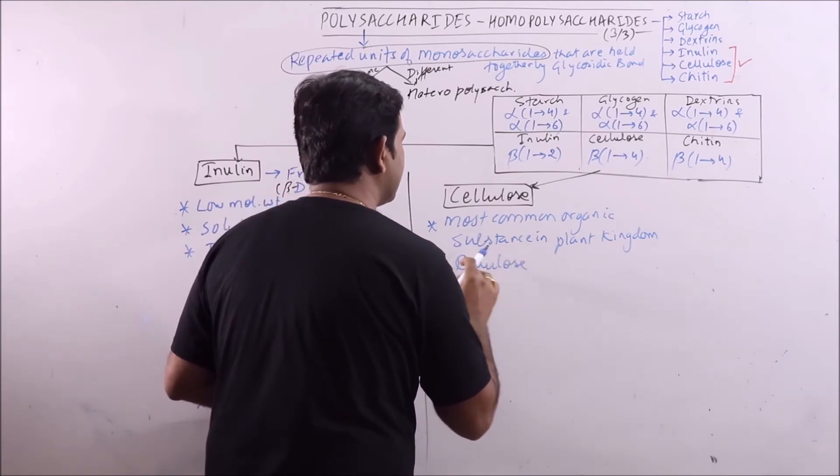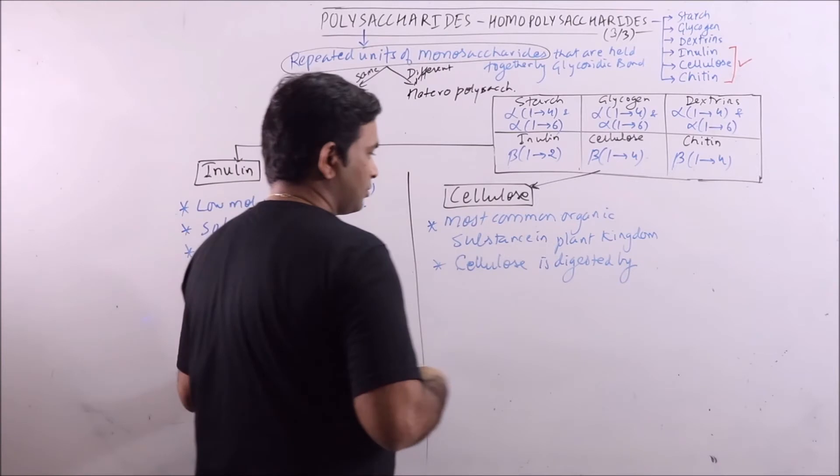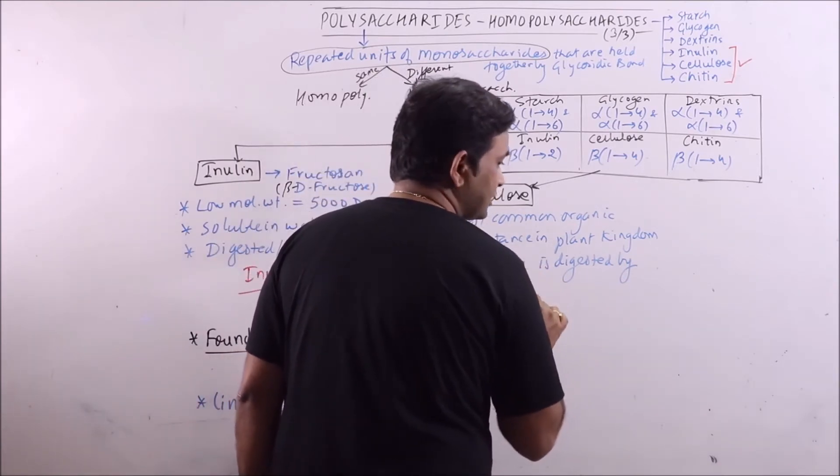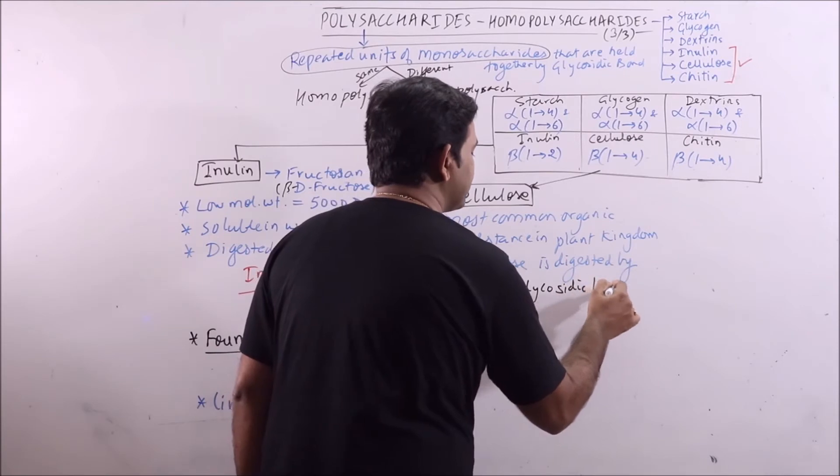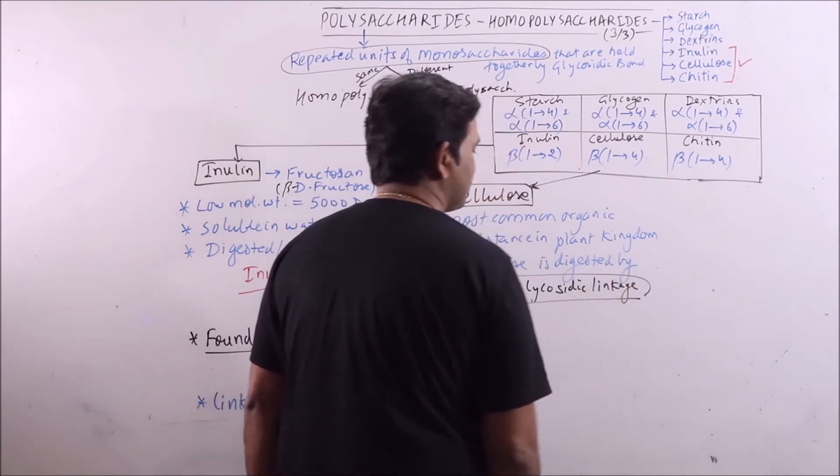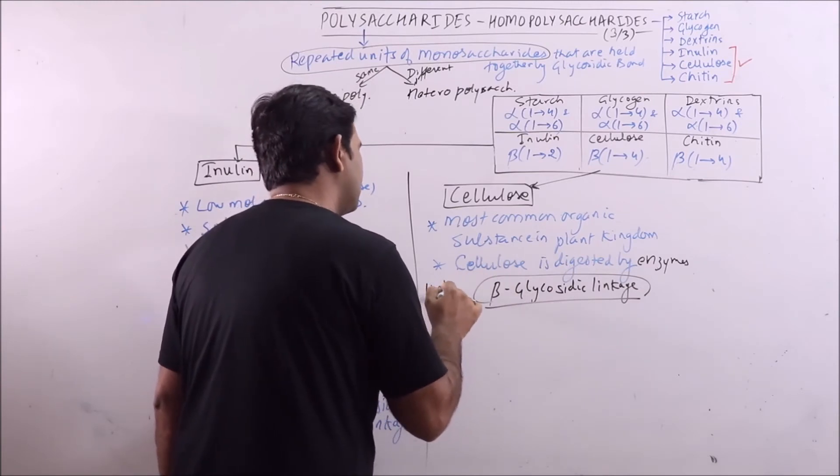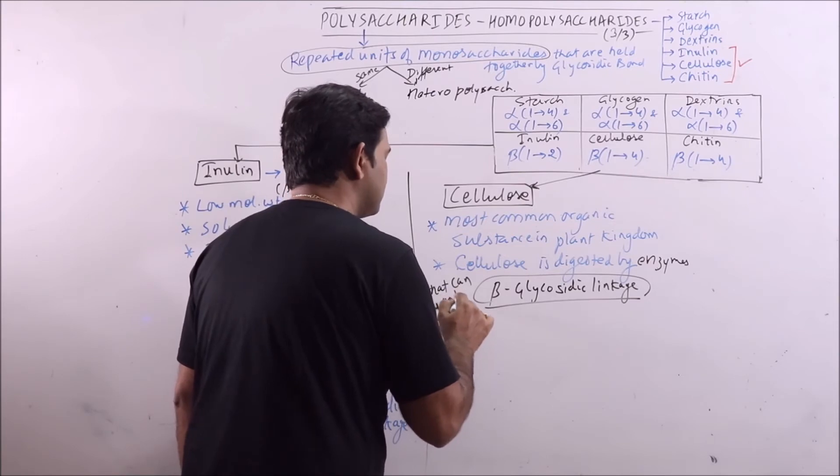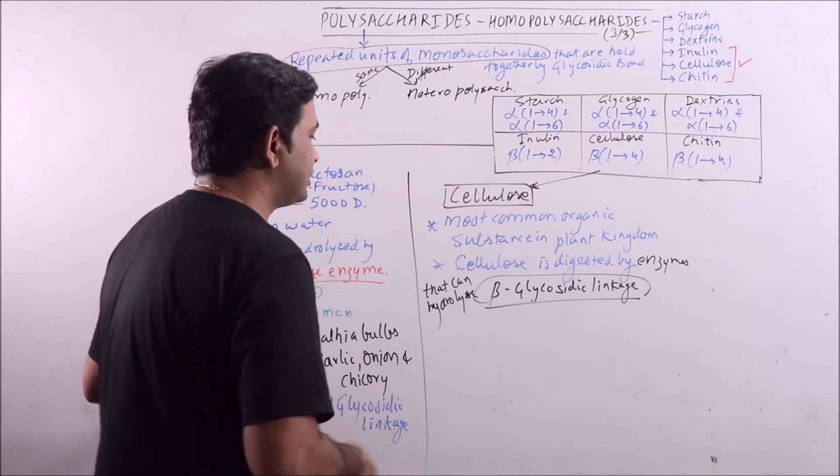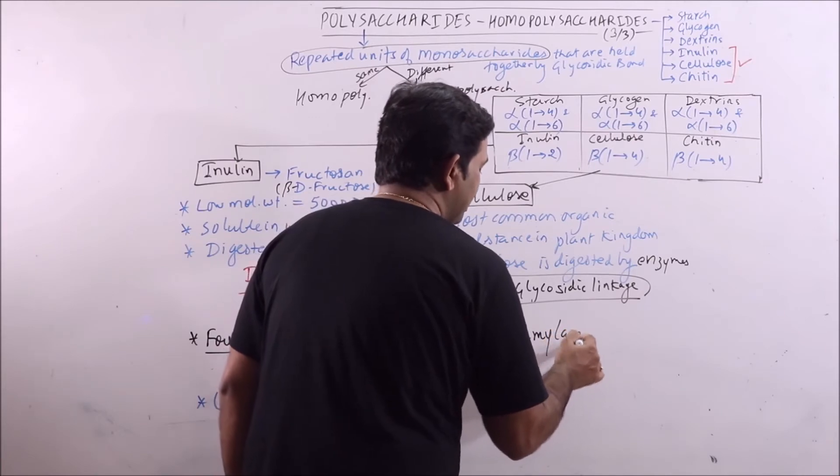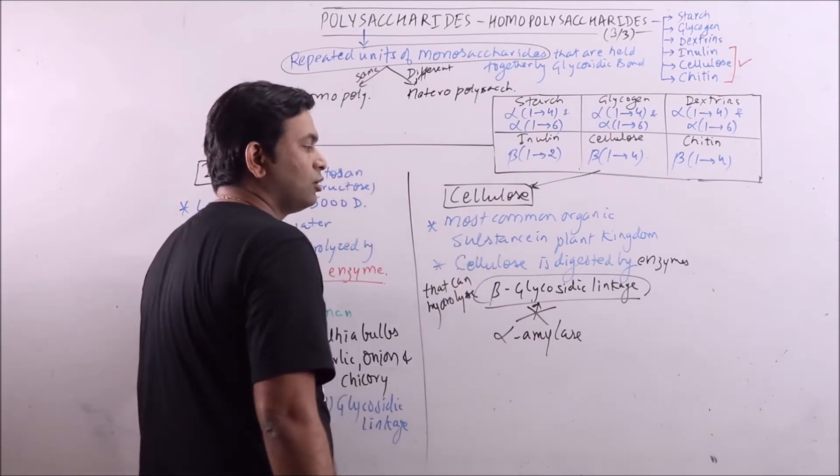Cellulose is digested by enzymes that can hydrolyze the beta-glycosidic linkage. In humans, alpha amylase is there. So alpha amylase can hydrolyze the alpha-glycosidic linkages or bonds, but not the beta-glycosidic linkages. So cellulose is not digested in human.